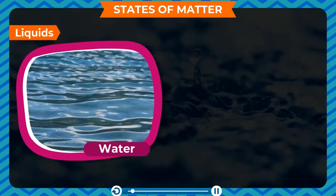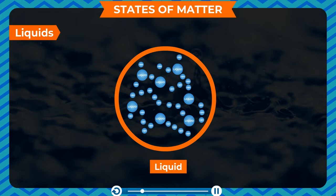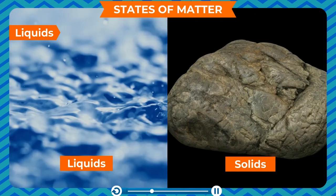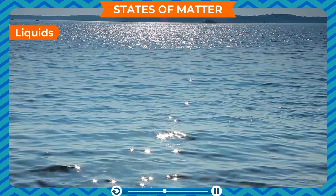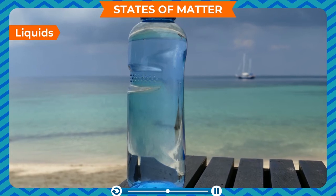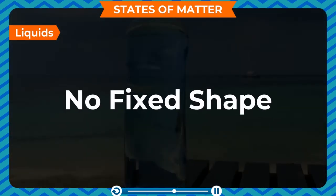Liquids: water, milk, and oil are examples of liquids. The molecules in a liquid are also packed together, but not as closely as in solids. The intermolecular force is less in liquids compared to solids, so the molecules in a liquid can move freely inside a container.